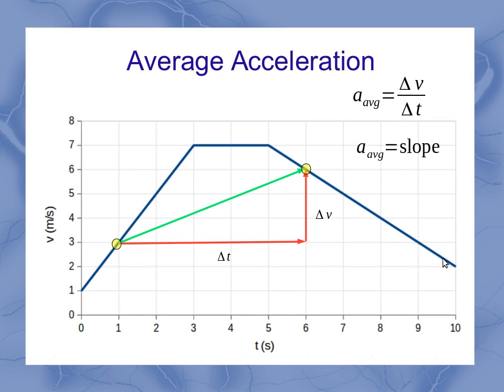Now when we had average acceleration, we had it represented by the formula that the average acceleration was the change in velocity divided by the change in time.